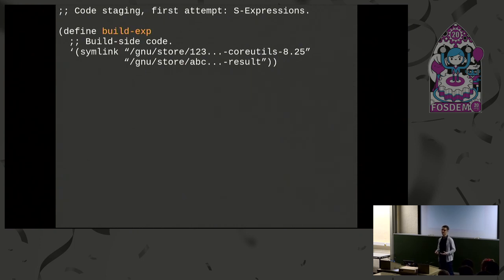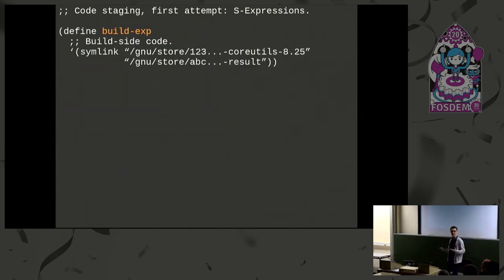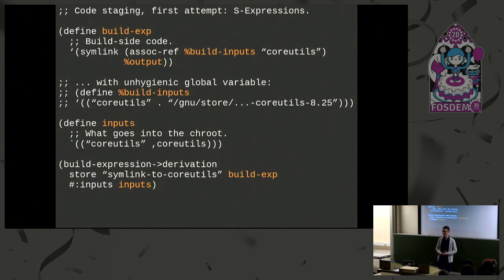An S-expression is essentially a list that can be evaluated by Scheme or Lisp or some similar language. The very wonderful thing about S-expressions is that they can represent data and code at the same time. A lot of people that like Lisp like it because it has this property called homoiconicity — the fact that you can use code and data interchangeably. This allows you to create an expression, bind it to a variable, pass it around, and evaluate it later. But you can't just embed the output path from the beginning because that is not known until you build the derivation.